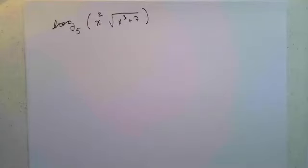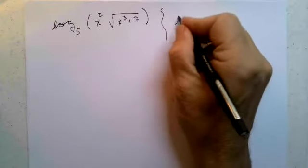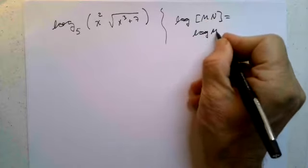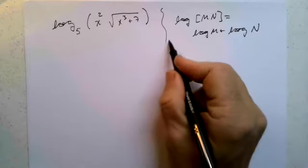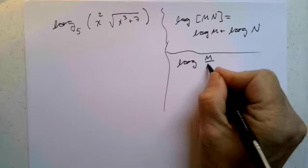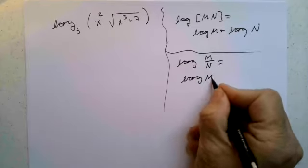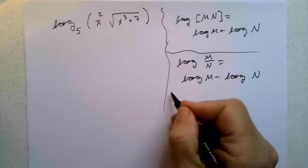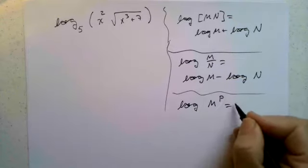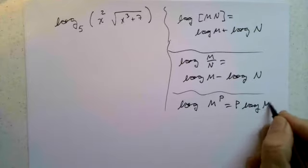This question asks us to rewrite the following in terms of a sum or difference of products of functions — basically expanded using the rules of logarithms. There are three basic rules to remember: log of m times n is log m plus log n, so the log of a product is the sum of the logs. Log of m over n is log m minus log n. And if I have the log of m to some exponent p, I can pull the exponent down: p times log of m.